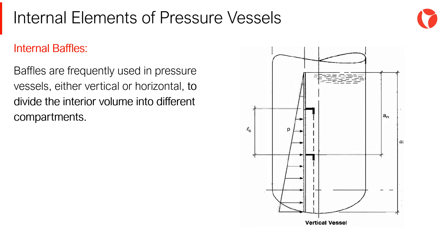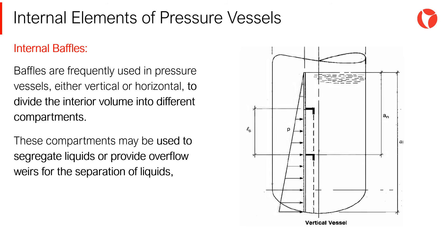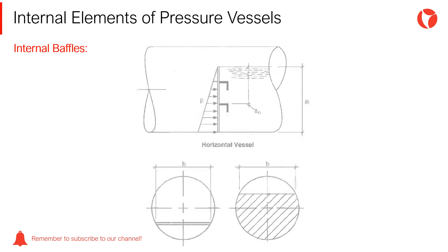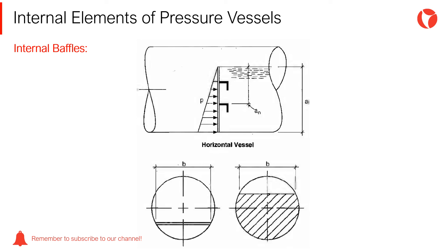Baffles are frequently used in pressure vessels, either vertical or horizontal, to divide the interior volume into different compartments. These compartments may be used to segregate liquids or to provide overflow weirs for the separation of liquids. When welded across the entire cross section of the vessel, they must be checked to ensure they are not unduly restricting the diametral expansion of the vessel.